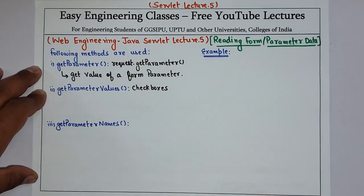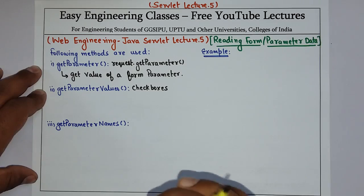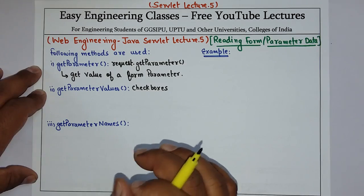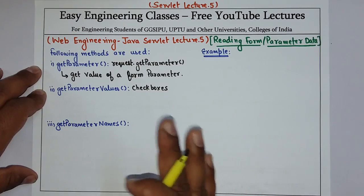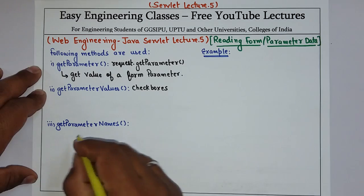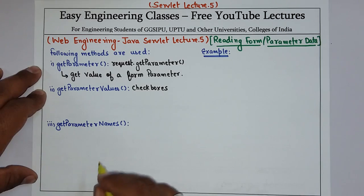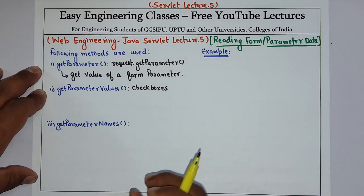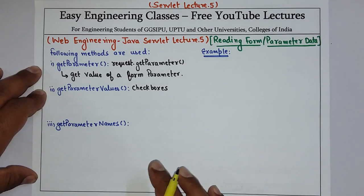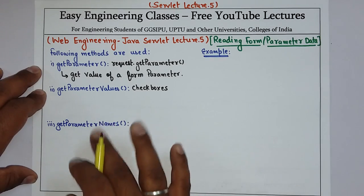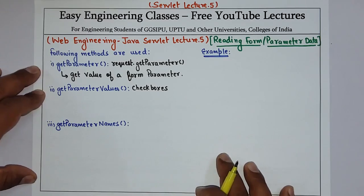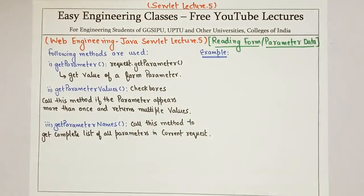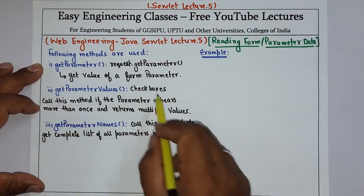getParameterValues is used if the parameter appears more than once and different values are associated with each of the requests — for example, checkboxes. The third method is getParameterNames. This method is called when you want a complete list of all the parameters in the current request.